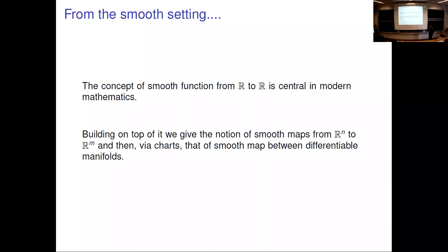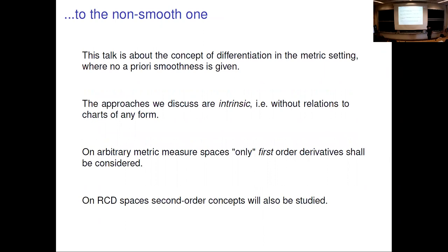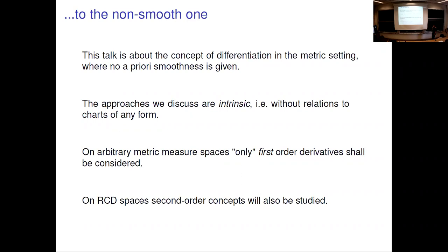Smoothness is something we perfectly understand for functions from ℝ to ℝ — that's where we first learn the concept of derivative — and by working componentwise we can go from ℝ^d to ℝ^k. By playing with charts we know what a smooth map between differentiable manifolds is. Now we move to a non-smooth setting where no a priori smoothness is given. In the manifold setting, smoothness is read through charts, but if you have no charts you have no smoothness of any sort.